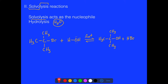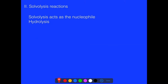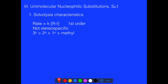The fact that this tertiary halogen is reacting fast means this happens by a different mechanism than SN2. In fact, this is going to be called SN1 — unimolecular nucleophilic substitutions. Their rate is first order; it just depends on the substrate concentration.